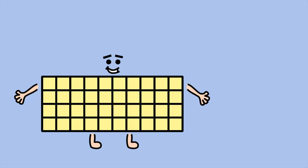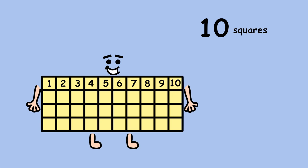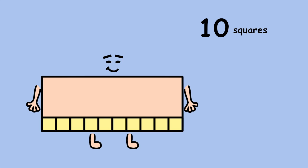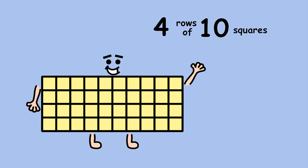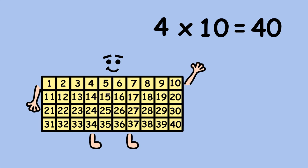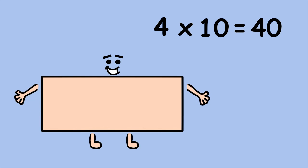We know each row has 10 squares. Now, how many rows are there? 4. 4 groups of 10, or 4 times 10 equals 40. If you don't like counting rows, you can count columns instead.